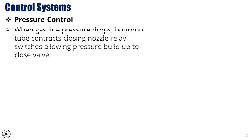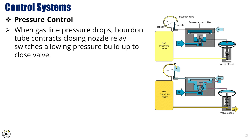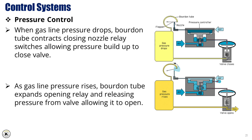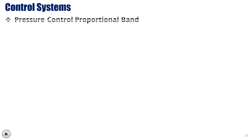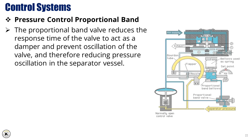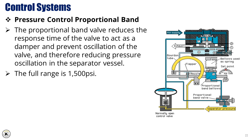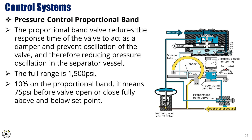When gas line pressure drops, the Bourdon tube contracts, closing the nozzle relay switches and allowing pressure to build up to close the valve. As gas line pressure rises, the Bourdon tube expands, opening the relay and releasing pressure from the valve, allowing it to open. The proportional band valve reduces the response time of the valve to act as a damper and prevent oscillation of the valve, and therefore reducing pressure oscillation in the separator vessel. The full range is 1,500 PSI; 10% on the proportional band means 75 PSI before the valve opens or closes fully above and below the set point.